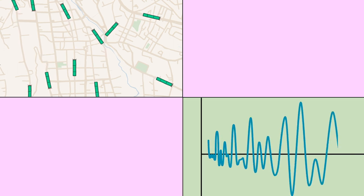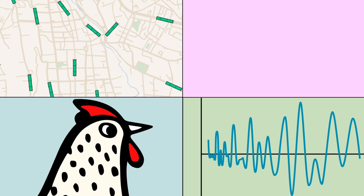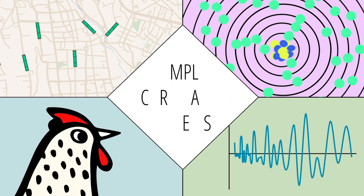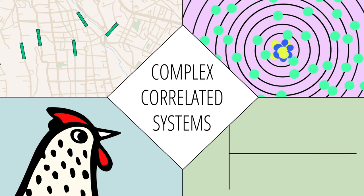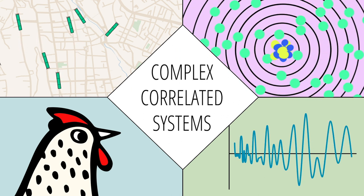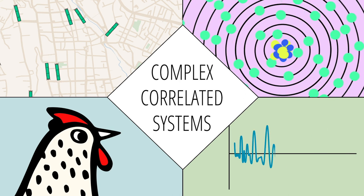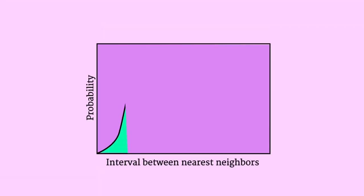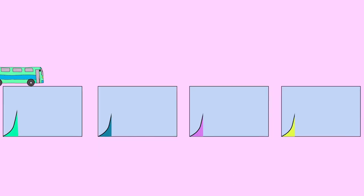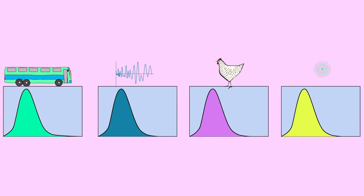The Cuernavaca bus system, the Riemann zeta function related to prime numbers, chicken retinas, and atomic nuclei are all examples of complex correlated systems. The components of these systems aren't independent — they interact and repel one another, and this leads to a statistical distribution in between randomness and order. The same distribution or pattern arises even though the components of these various systems are very different. They are said to exhibit universality.